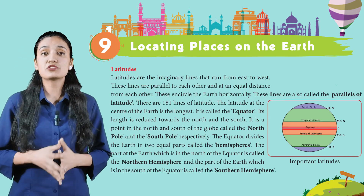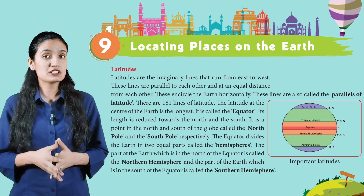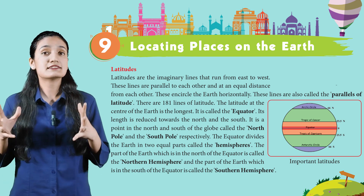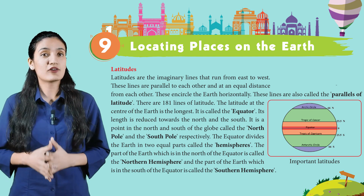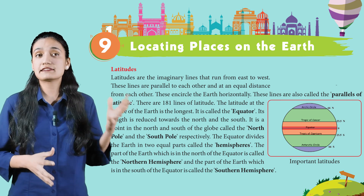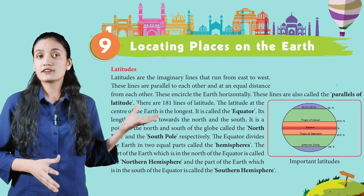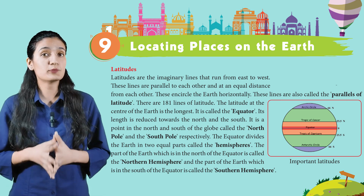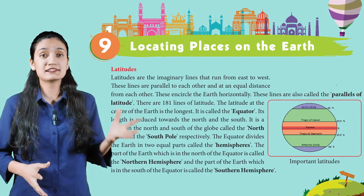Latitudes are the imaginary lines that run from east to west. These lines are parallel to each other and at an equal distance from each other. They encircle the Earth horizontally. These lines are also called the parallels of latitude. There are 181 lines of latitude. The latitude at the center of the Earth is the longest — it is called the equator. Its length is reduced towards the north and the south.